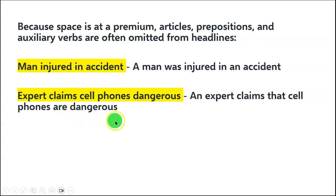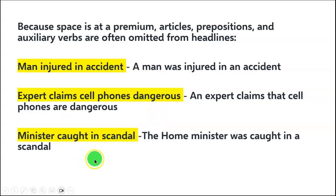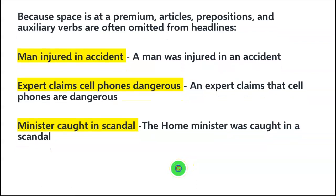Second example: 'Expert claims cell phones dangerous.' The correct sentence is 'An expert claims that cell phones are dangerous.' The article 'an' and the verb 'are' are missing. Third: 'Minister caught in scandal.' The correct statement is 'The home minister was caught in a scandal.' The verb 'was' and the article 'a' are missing. So articles, prepositions, and auxiliary verbs are often omitted from newspaper headlines.